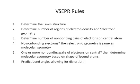The valence-shell electron pair repulsion model is a great model to use to help predict the three-dimensional shape or molecular shape of small molecules around a central atom.